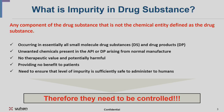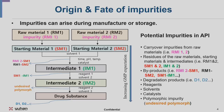What is an impurity in a drug substance? An impurity exists in the drug substance but is not defined as the drug substance itself. It includes all unwanted chemical entities present in the API or drug product arising from normal manufacturing. It has no therapeutic value, is potentially harmful, and provides no benefit to patients. Therefore, it needs to be ensured that the level of impurity is sufficiently safe to administer to humans. Impurity affects the quality of the pharmaceutical product and requires control.